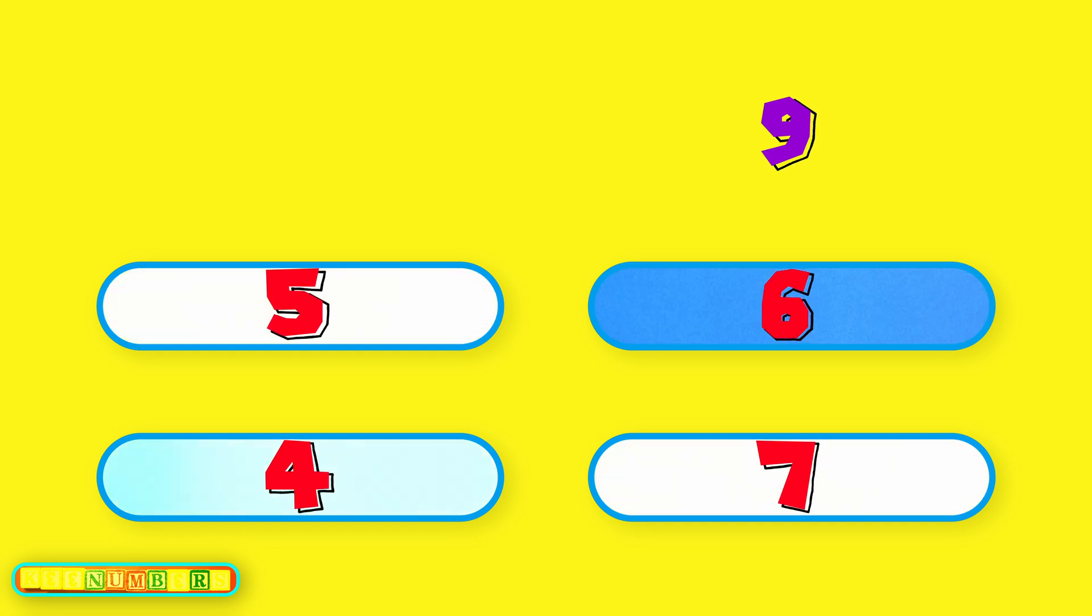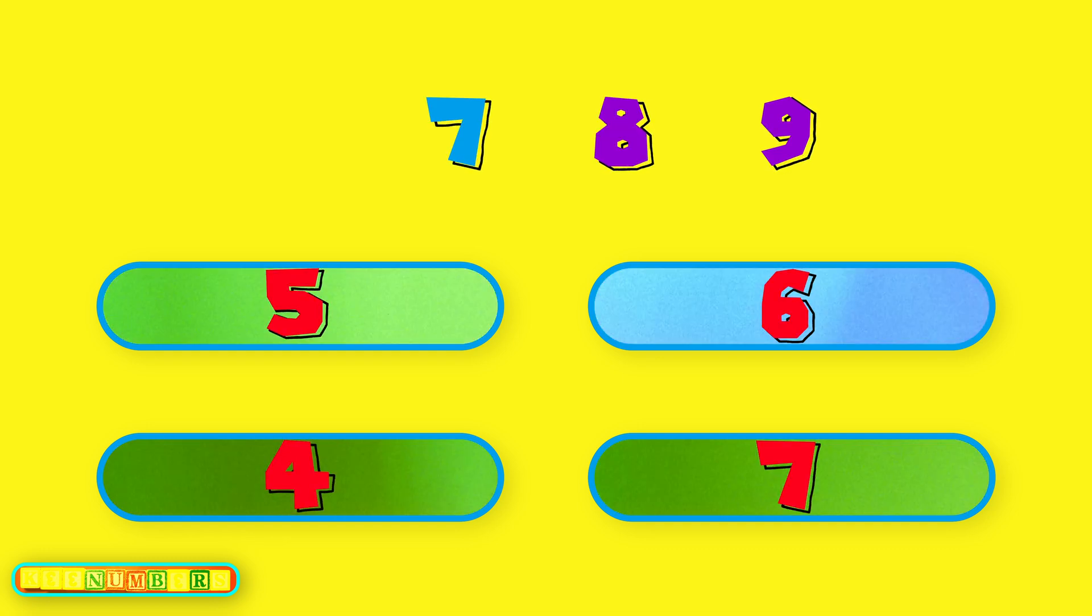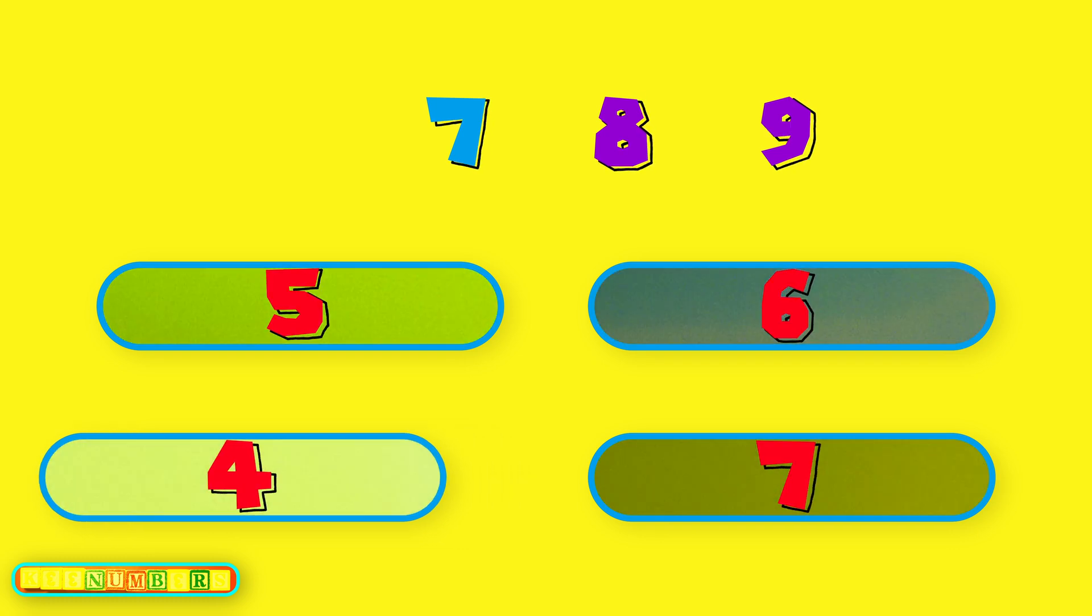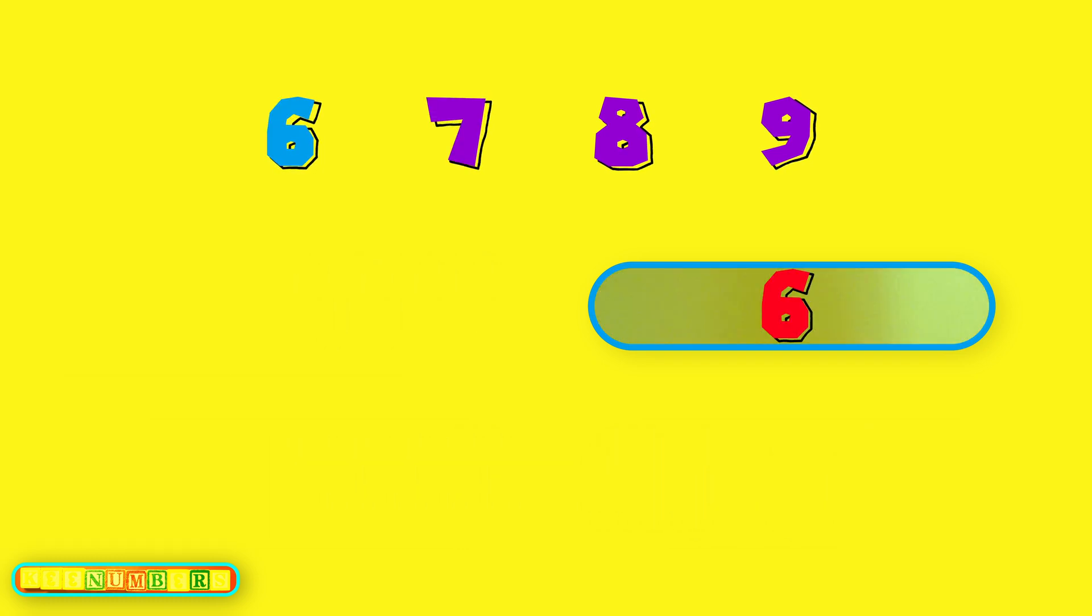Because if you go backwards from nine, just three spaces, that means we start at nine. We go eight, seven, six. Yeah, it's six. Too easy.